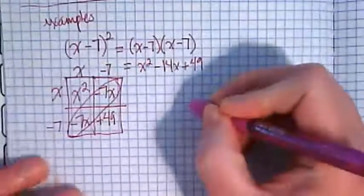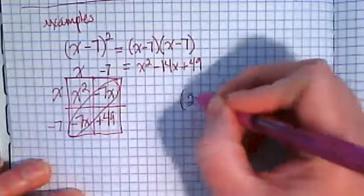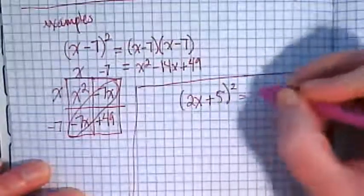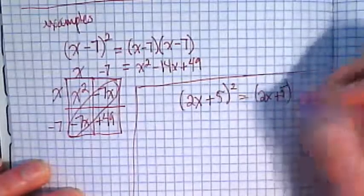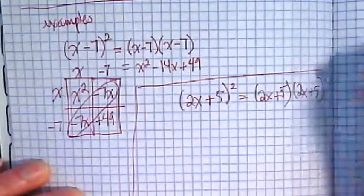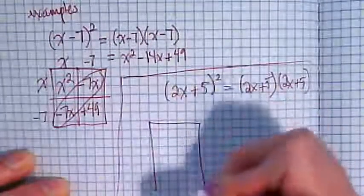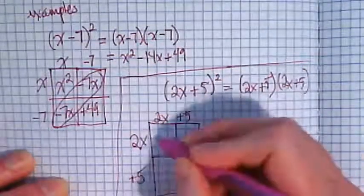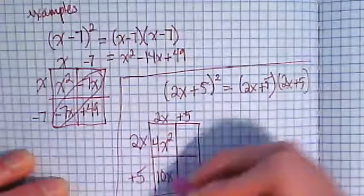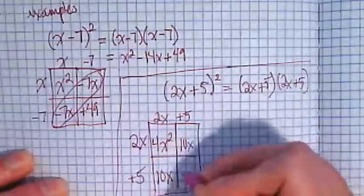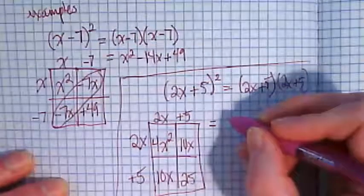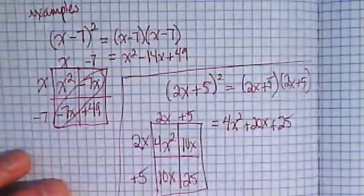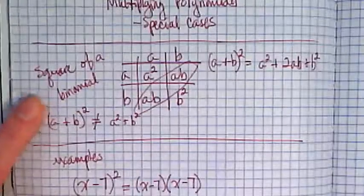Let's do one more example of (2x + 5)². That is equal to (2x + 5)(2x + 5). I'm going to show that in my box. I get 4x², 10x, 10x. Notice that pattern again. And 25. When I combine my like terms, I get 4x² + 20x + 25. Okay? So that is multiplying special cases when we have square of a binomial.